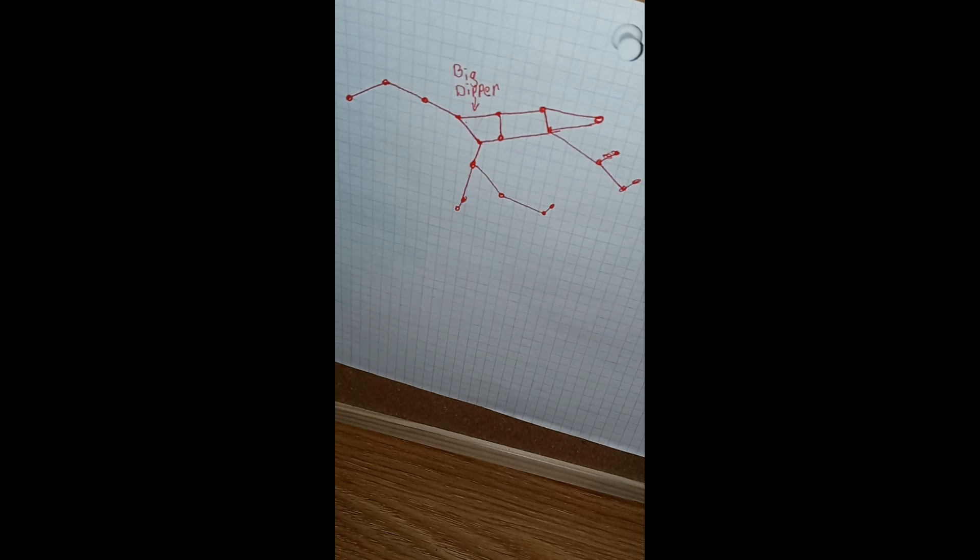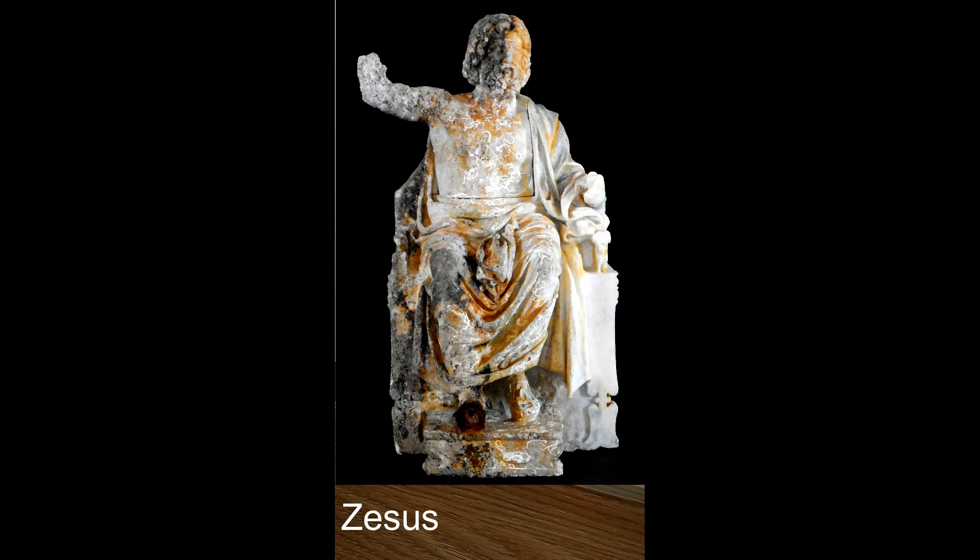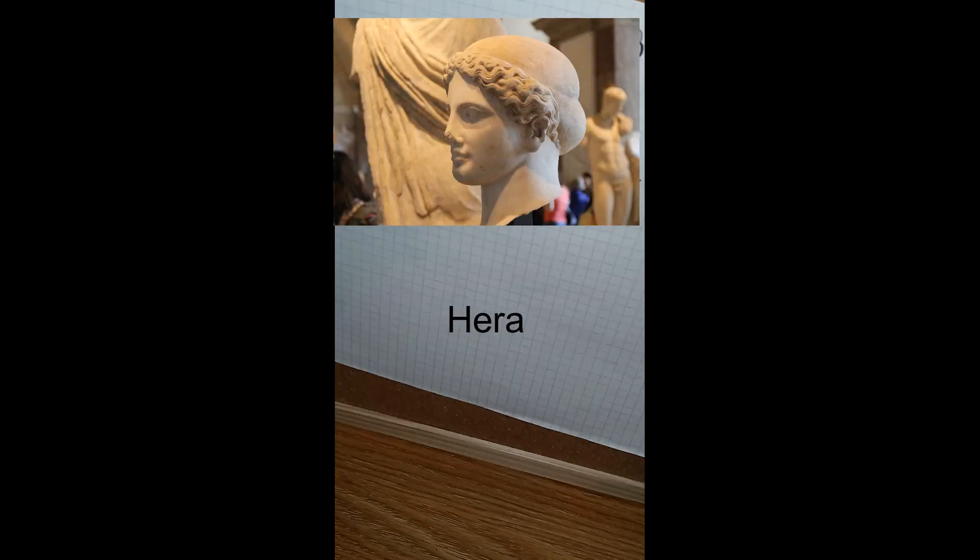Zeus fell in love with a nymph called Callisto, and together they had a son named Arcas. However, like always, Hera, Zeus's wife, got upset and found out about the whole thing, and she turned Callisto into a bear.